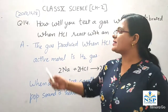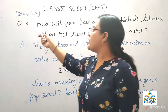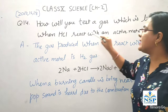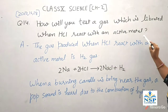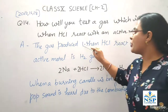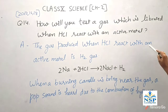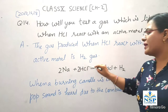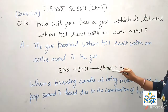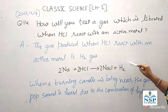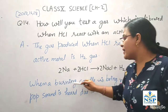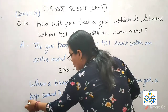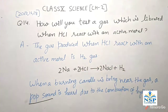Question number 14: How will you test a gas which is produced when HCl reacts with an active metal? The gas produced when HCl reacts with an active metal is hydrogen gas. For example, when sodium reacts with hydrochloric acid, it gives NaCl and hydrogen gas is produced. When a burning candle is brought near the gas, a pop sound is heard due to the combustion of hydrogen.